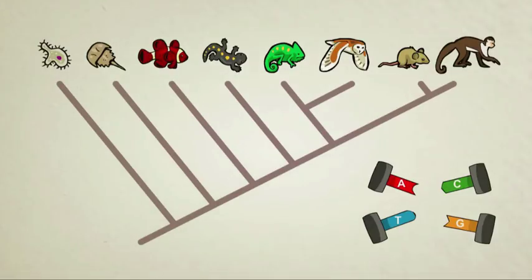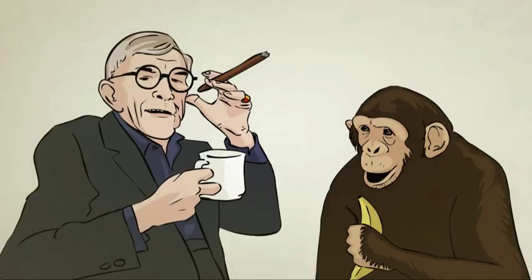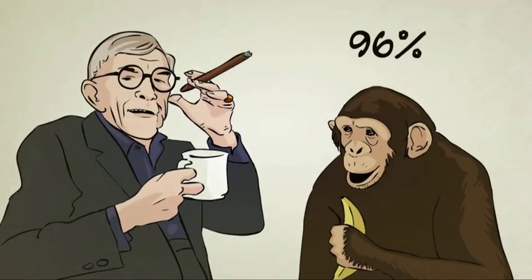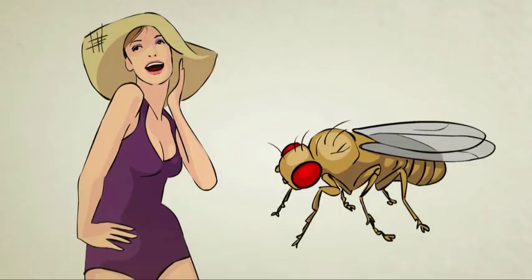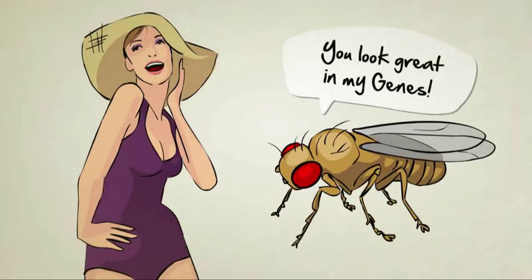Many creatures even share some of the same genes. You might not be too surprised to learn that humans and chimps, which are closely related, share 96% of their genetic code. But what would you think a lowly fruit fly has in common with a beautiful swimsuit model? Surprisingly, about half of its genes.